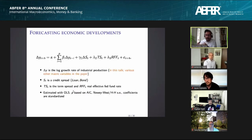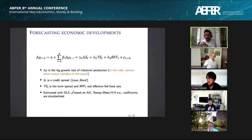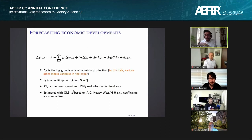We use a standard forecasting regression setup, with the H-period-ahead growth rate in a macro variable on the left-hand side — focusing on industrial production for the slides, but also including non-farm payroll and the unemployment rate in the paper. Controls include the term spread and the real effective Fed funds rate, and the key variable delta-S is the change in the credit spread: either the bond, the loan, or sometimes both.